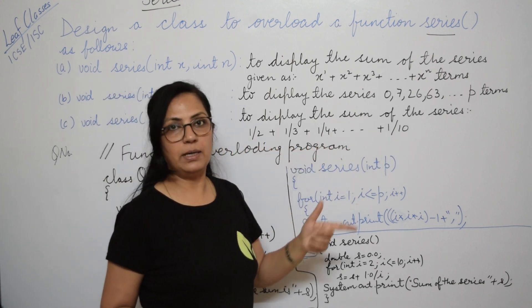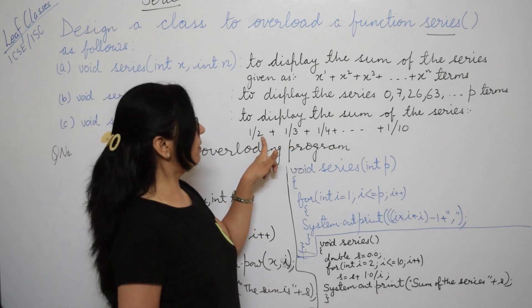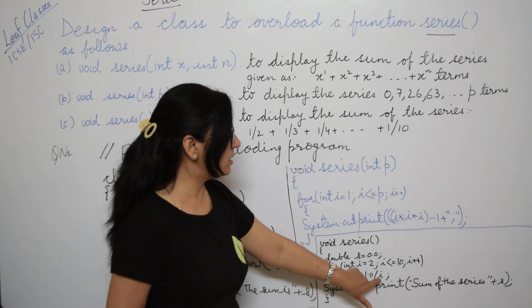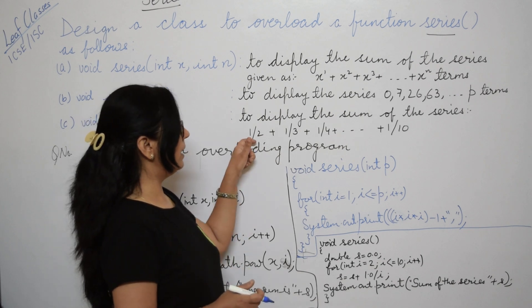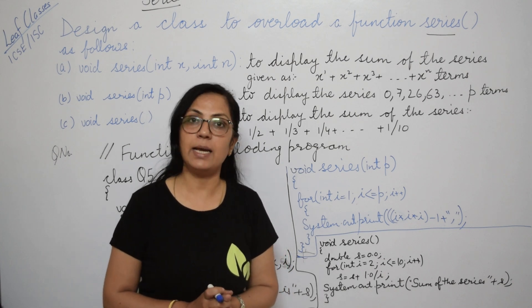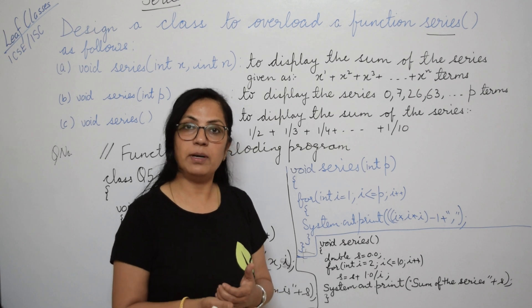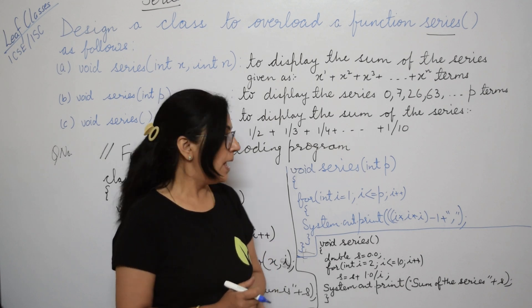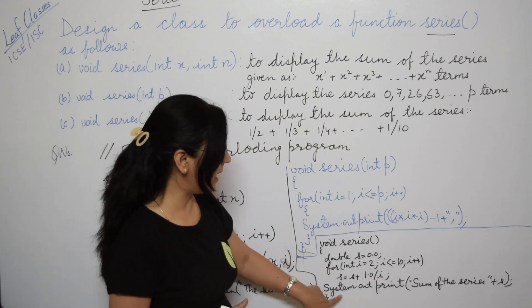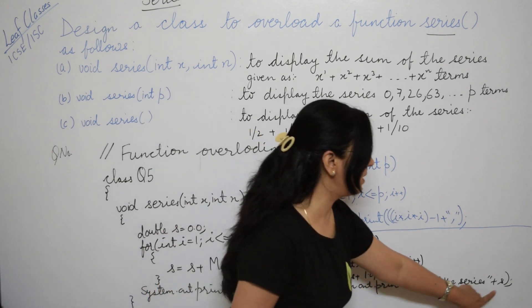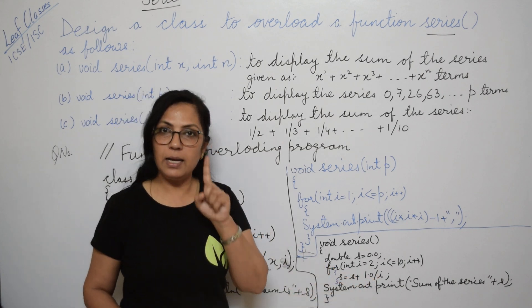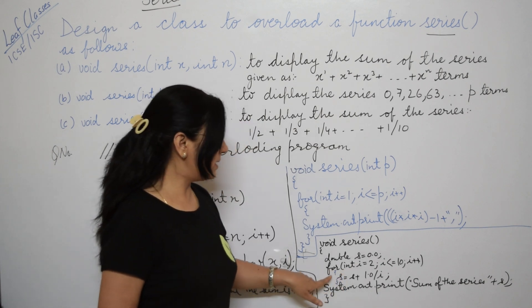The numerator in all is 1, so numerator is constant and this is variable. The looping variable starts from 2 and goes till 10. You write s equals s plus 1.0 slash i. Why 1.0? If you do only 1 slash 2, it will give zero because in integer division, slash gives the quotient part. If numerator is smaller than denominator, quotient will be zero. This s equals s plus 1.0 slash i is in the loop, so if one statement is there, braces are optional. Then write system.out.println sum of the series is s.